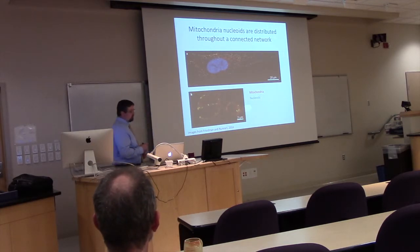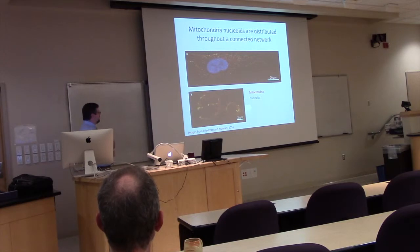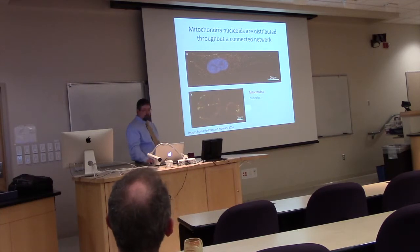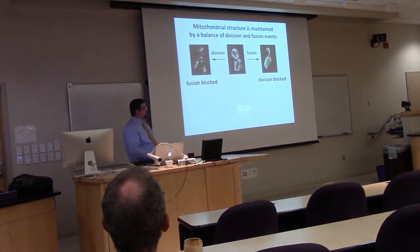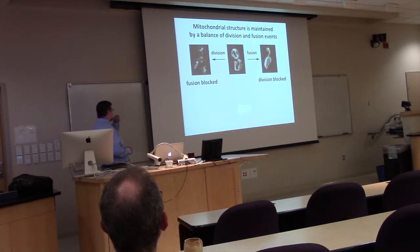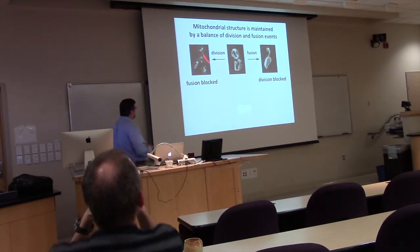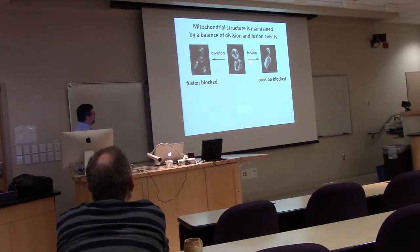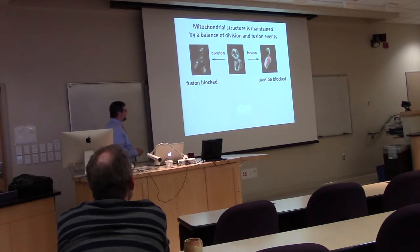The network can share contents, remains distributed, and can change in response to metabolic needs. This complex mitochondrial structure is maintained by a balance of division and fusion events. When you block fusion, you get overstimulated division and a fragmented mitochondrial network — more like the classical way people have thought about mitochondria. If you overstimulate fusion or block division, you get a highly connected net-like morphology.